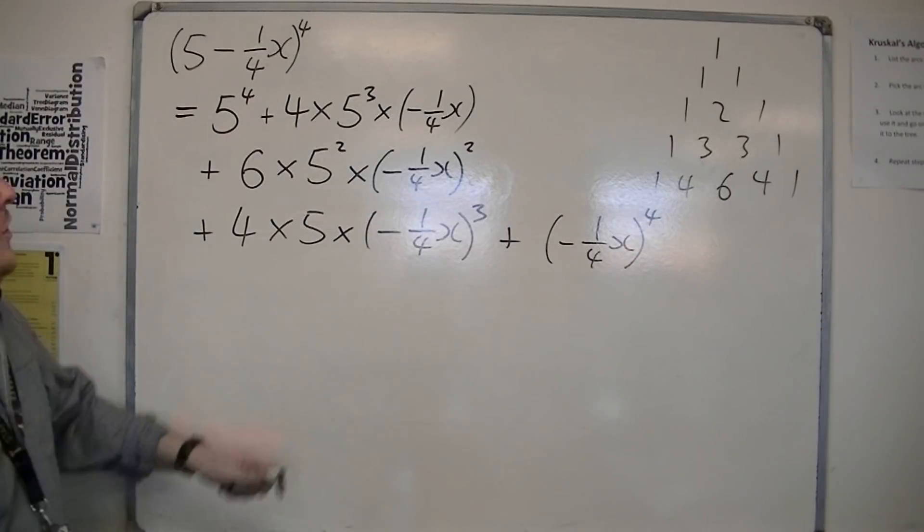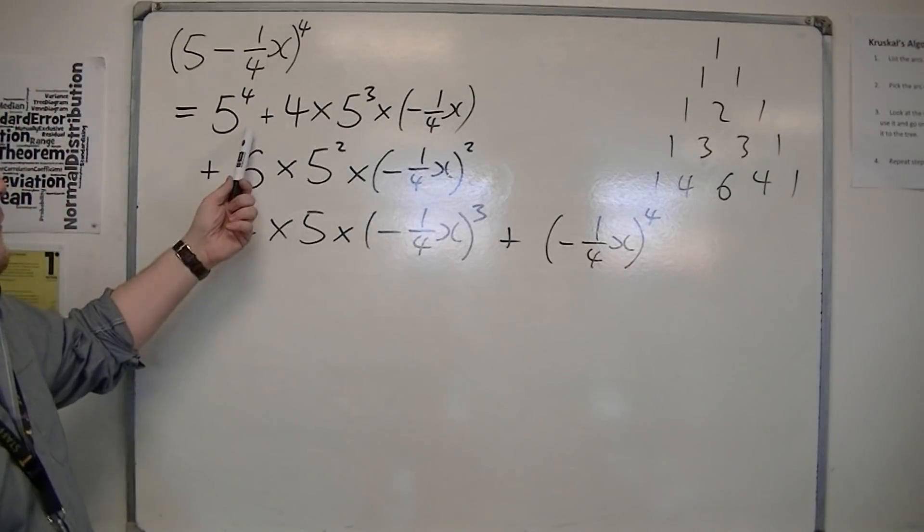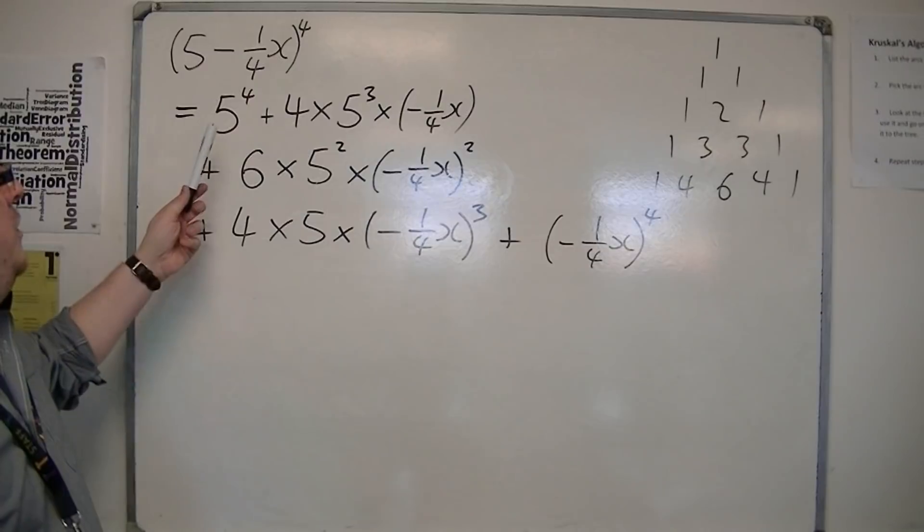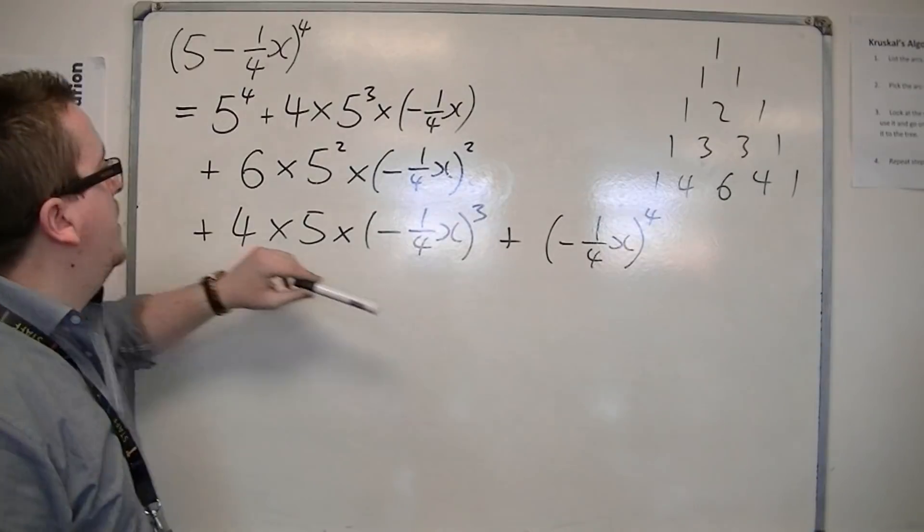So you can see that the minus a quarter x increases in power each term. The 5 decreases in power each term. And you've got the coefficients of the fourth row of Pascal's triangle.